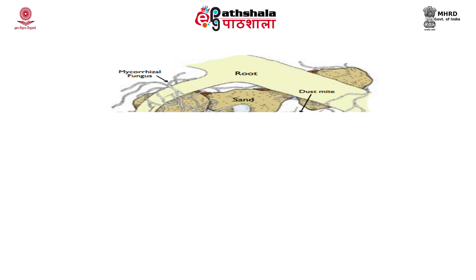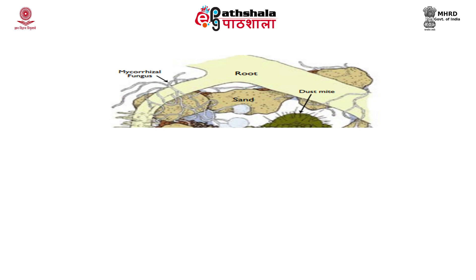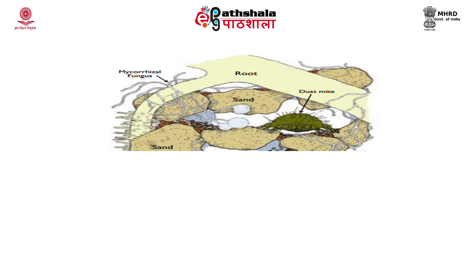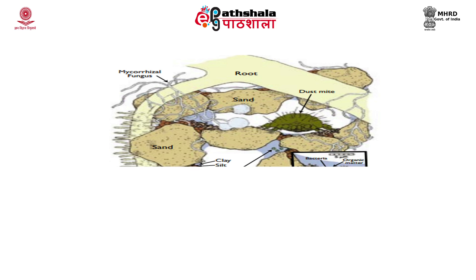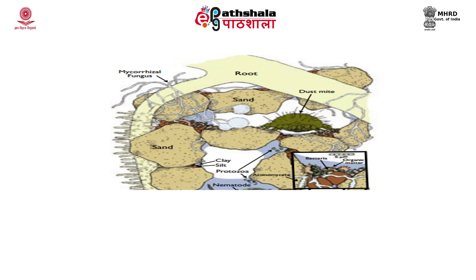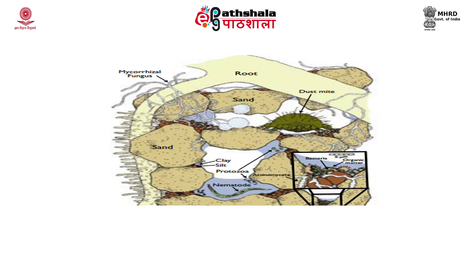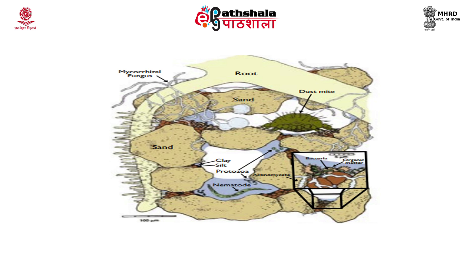Among these, bacteria are the smallest and the most diverse soil microbes. Bacteria are important in soil organic matter decomposition, nutrient transformation, and small clay aggregations. Some bacteria carry out very special roles in the soil, such as rhizobia, the nitrogen-fixing bacteria associated with legume roots. Protozoa are mobile organisms that feed on other microbes and soil organic matter. Algae, like plants, photosynthesize and are found in the soil environment.